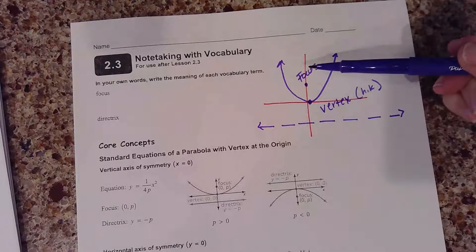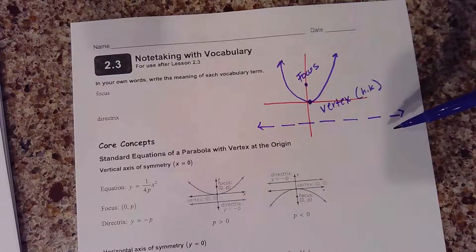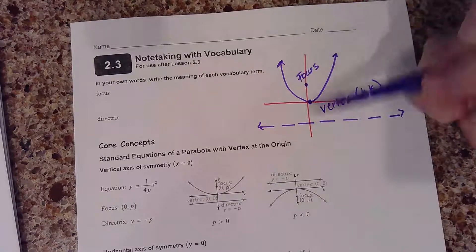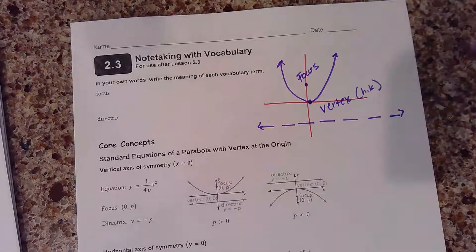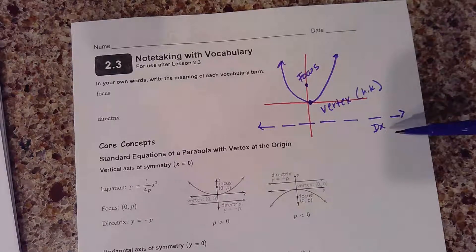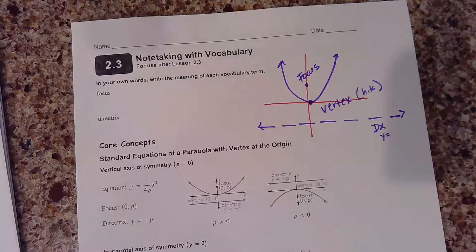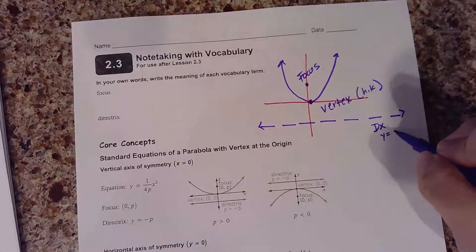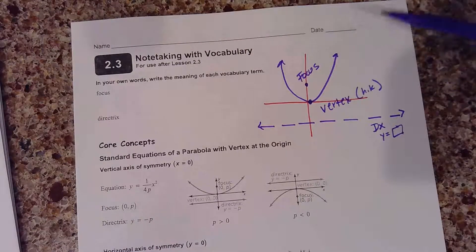So if you know your axis of symmetry is a vertical line, your directrix is a horizontal line, and vice versa. We already know the axis of symmetry is a vertical line that passes through your vertex. So your directrix — I always just use DX as an abbreviation — is a Y equals, or X equals equation. It's kind of the opposite of your axis of symmetry.